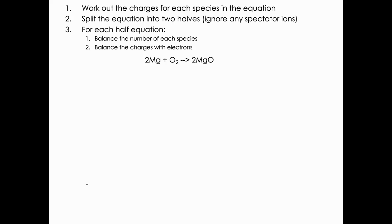The best thing is to do an example. First, work out the charges for each species. On the left-hand side, magnesium and oxygen are just elements so they have no charge. For the product, magnesium is in group two so it forms Mg2+, and oxygen is in group six so it forms O2-. Now split the equation into two halves — there are no spectator ions in this example — giving Mg → Mg2+ and O2 → O2-.